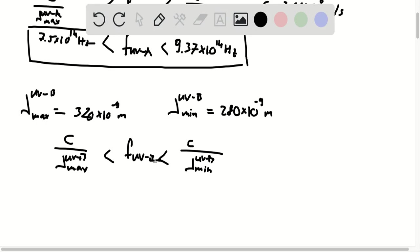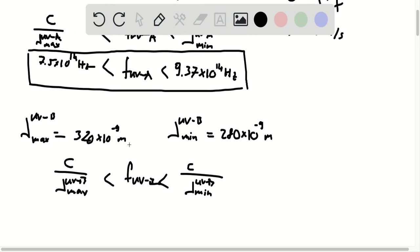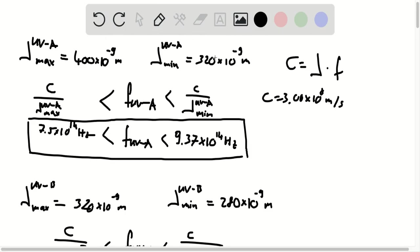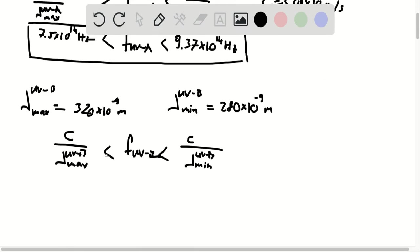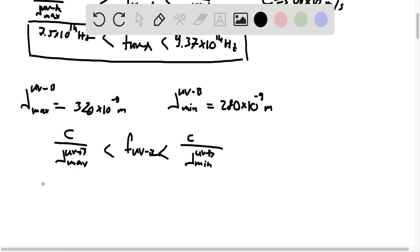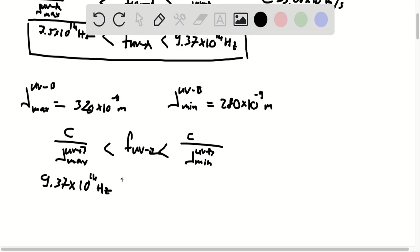And here you know that the maximum is corresponding to the same as the minimum of the UVA. So you know that it's the same value. So this is 9.37 times 10 to the 14 hertz. So that's the minimum frequencies for UVB.